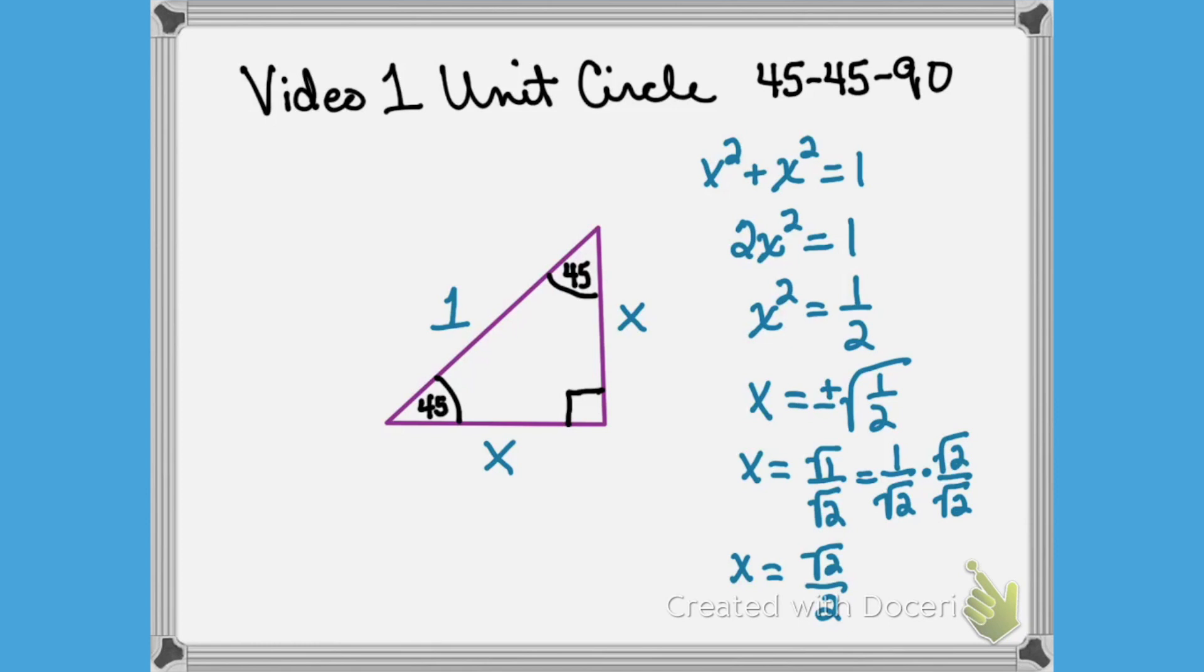So the lengths of the sides of the 45-45-90 triangle are both square root of 2 over 2. They are the same.